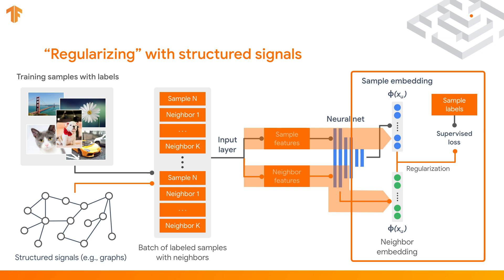Then, the difference between the sample's embedding and its neighbor's embedding is calculated and added into the final loss as a regularization term. So what is the intuition here? By adding this regularization term, the neural network learns to keep the similarity between a sample and its neighbor. In other words, the neural net learns to maintain the local structure of a sample and its neighborhood. By leveraging these structured signals, neural nets can learn with less labeled data and also be more robust.